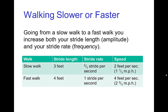A faster walk might have a longer stride and a quicker cadence. If you have a stride length of four feet and a stride rate of one stride per second, then you're traveling at four feet per second — just twice the slow walk speed. That's an example of how speed relates to both amplitude and frequency for cyclic motion.